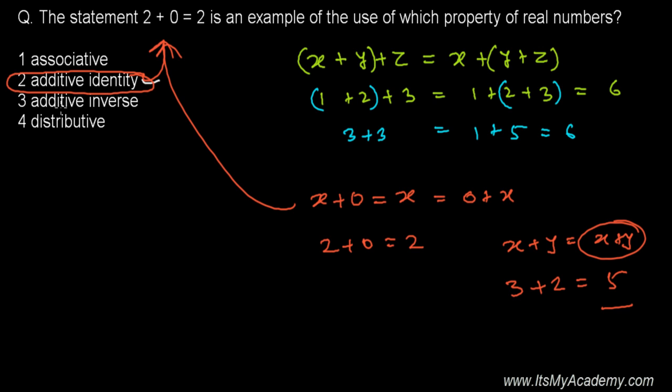Now why is additive inverse not our answer? Because additive inverse is something like this: if it is 3, then the additive inverse of 3 is negative of that, it's -3. And if -3 is the number, then the additive inverse of -3 will be minus of -3, and that's going to be minus times minus, that's +3.